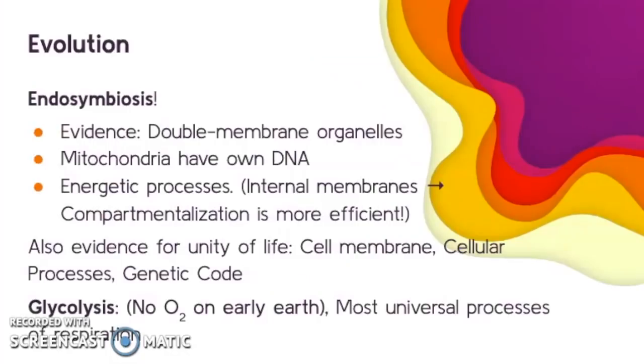If you're taking the exam in 2020, the unit on evolution has been removed because of the COVID-19 crisis, but there are some evolutionary themes that show up before unit 7, so you might need to study endosymbiosis. This is the idea that eukaryotic organisms arrived due to engulfing smaller prokaryotic organisms and forming a symbiotic relationship. There's evidence for this in that we have organelles with double membranes. The mitochondria have their own DNA and energetic processes.